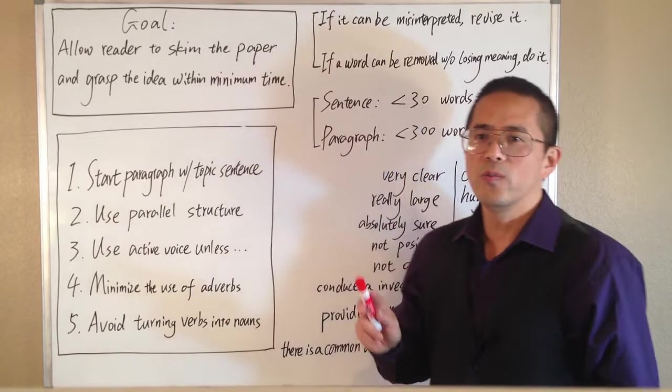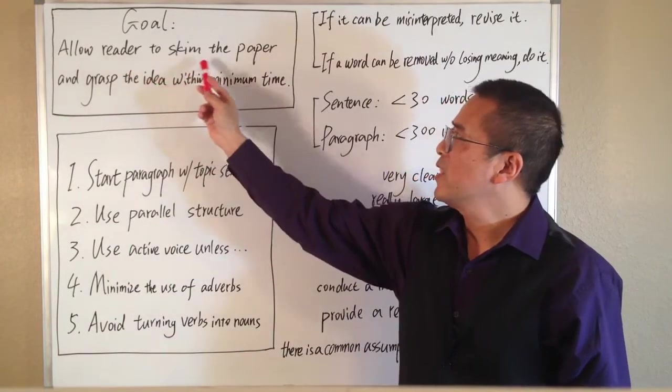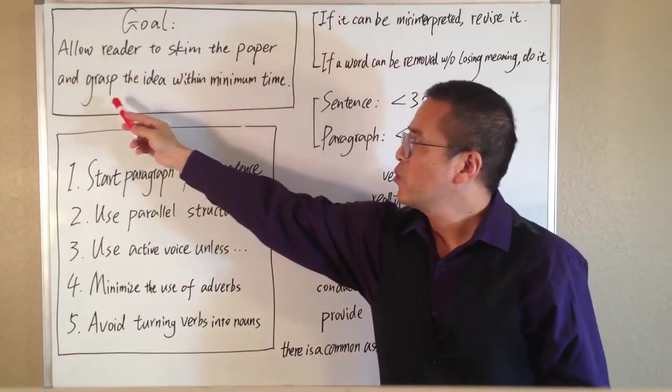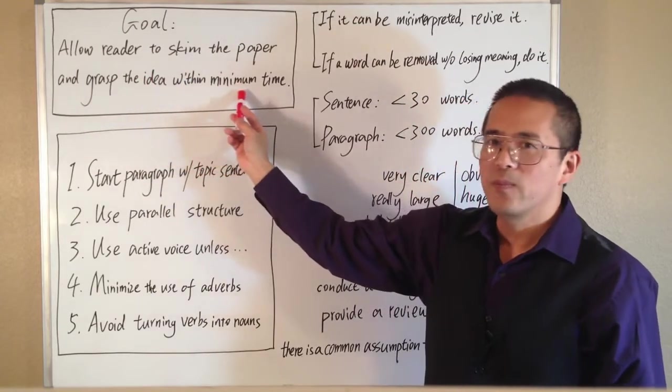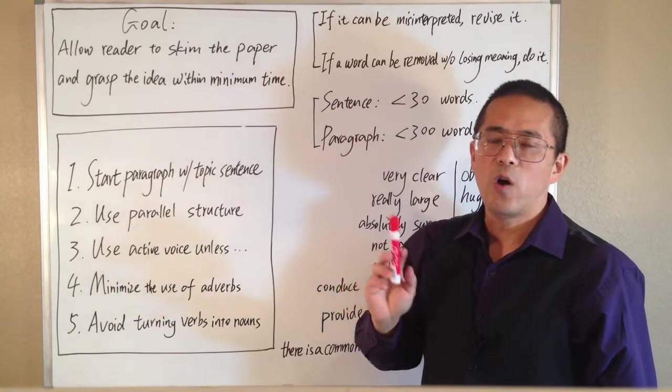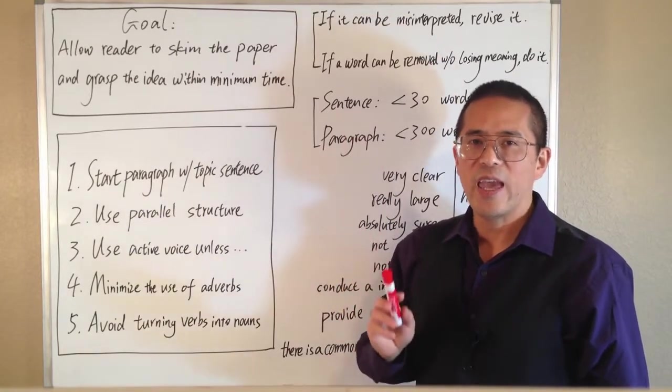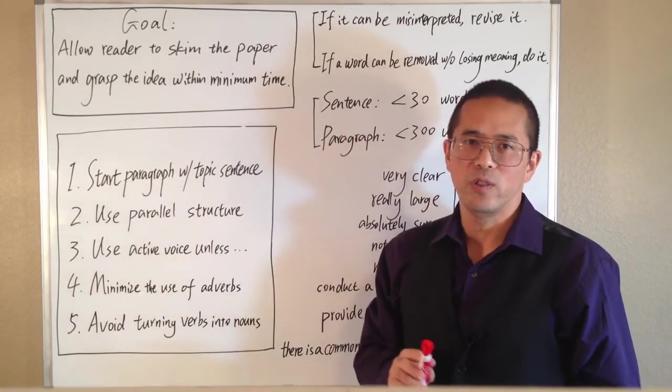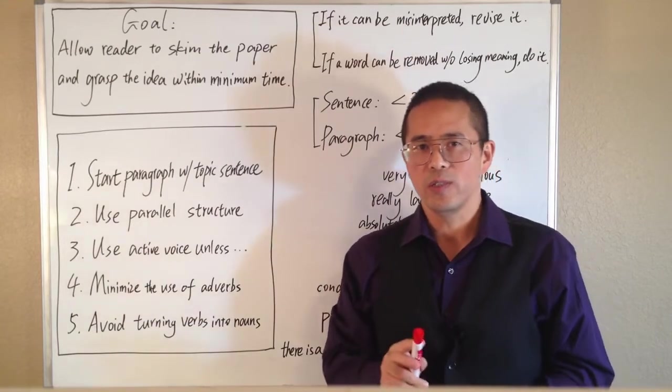The goal is to allow our reader to skim the paper and grasp the idea within minimum amount of time. We want to cut all the redundant words and avoid all the ambiguous words. There are two golden rules here.